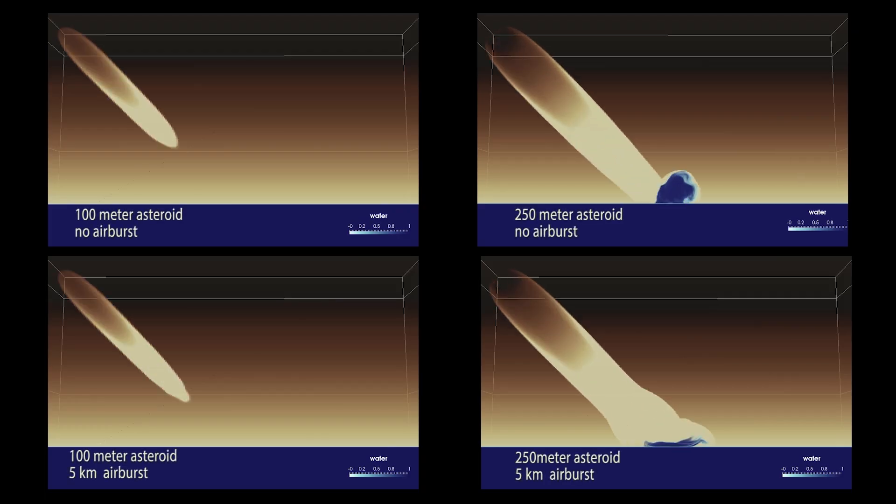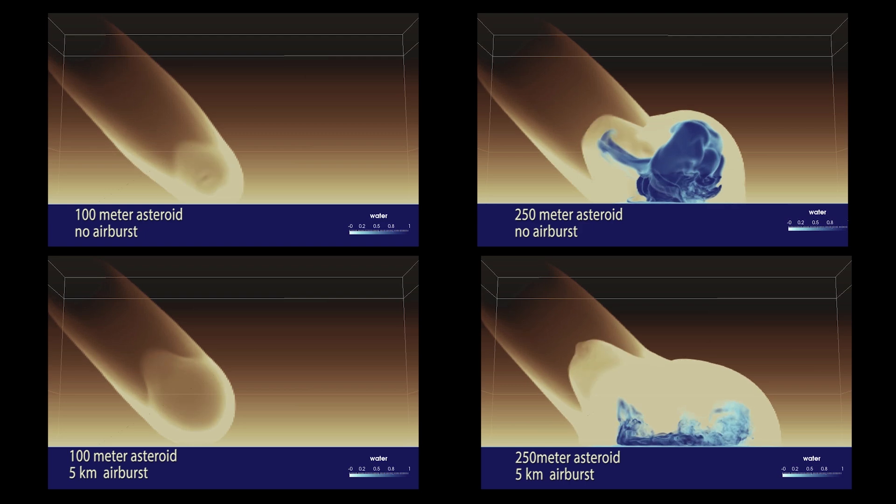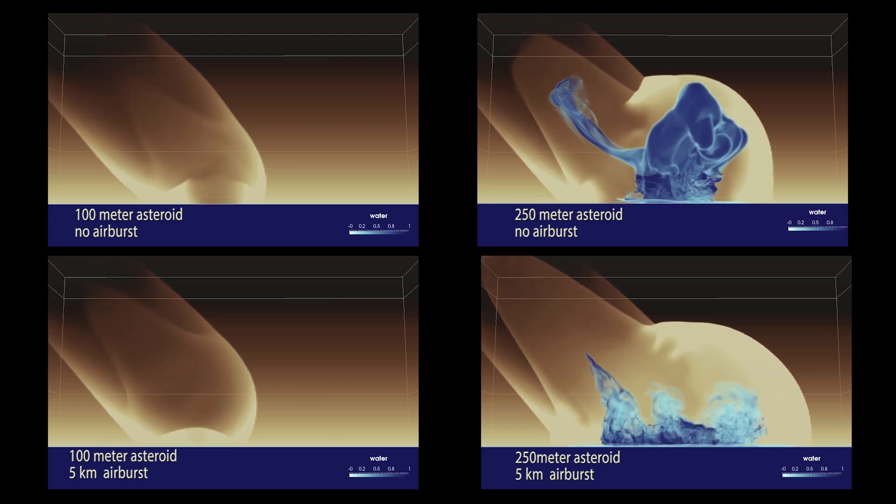By studying different runs from the ensemble, we see the effects of varying asteroid size, angle of impact, and airburst.